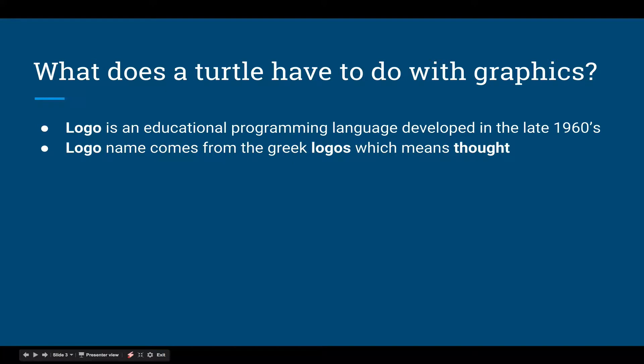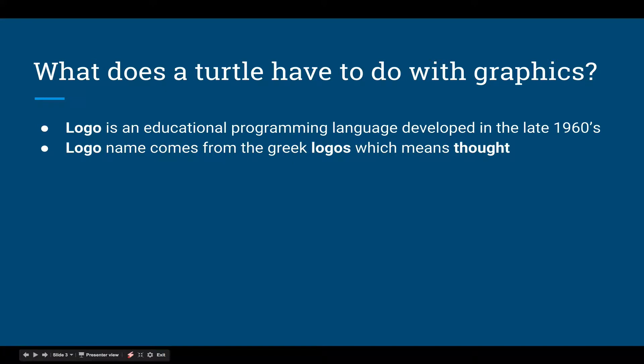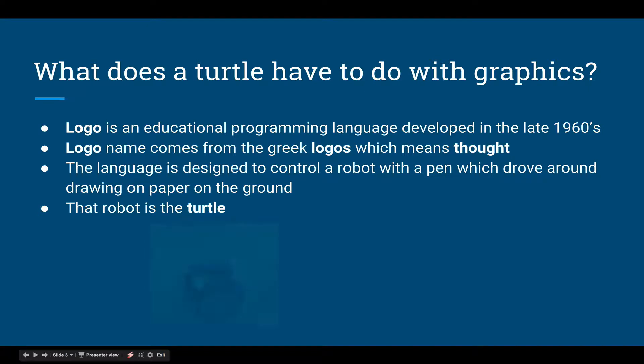The word Logo comes from Logos, which means 'thought' in Greek. So what happened was there's this little robot with a pen, and the language made the robot move around and draw pictures with the pen. And it was meant to teach kids the concepts of programming. And the robot is the turtle — that's what it had to do with turtles.